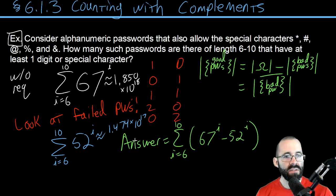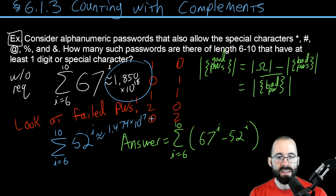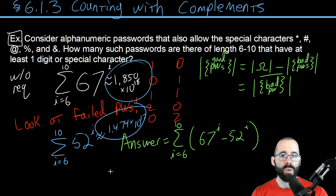And again, these numbers are not that close to each other. This is 10 times as big as this, so we're still getting 90% of the passwords. We're only throwing out 10% of all possible passwords with this requirement.